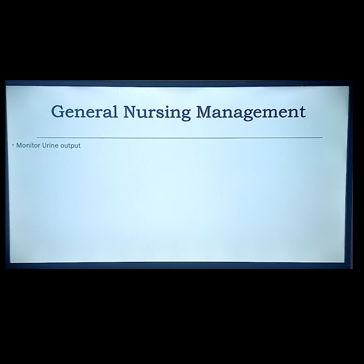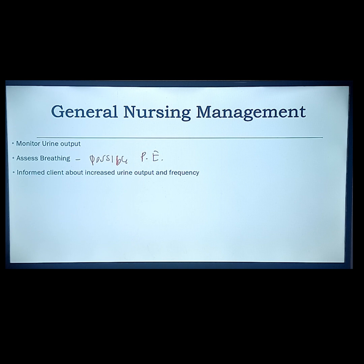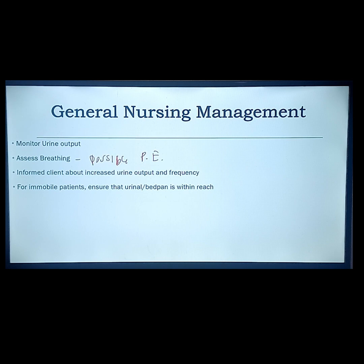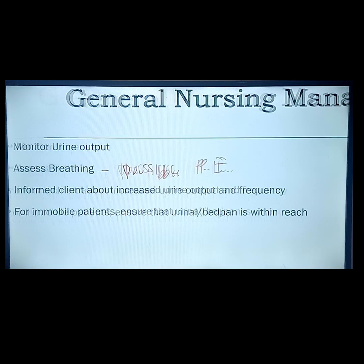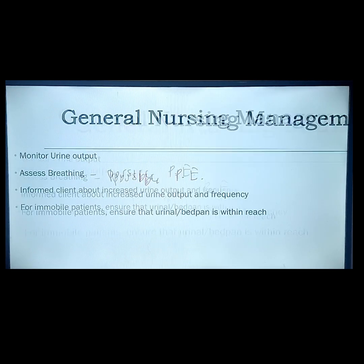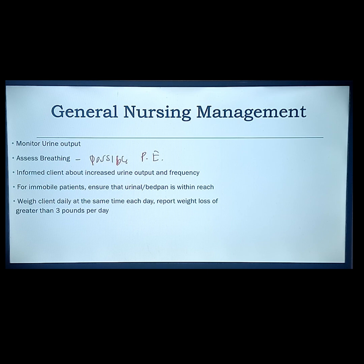General nursing management includes monitoring urine output, assessing breathing for possible pulmonary edema. Inform the client about increased urine output and frequency. For mobile patients, ensure a urinary bedpan is available. Weigh the client every day — an increase of 3 pounds per day is abnormal, since the normal increase per week is around 1 to 2 pounds only. An increase of 3 pounds per day indicates fluid accumulation and possible edema.